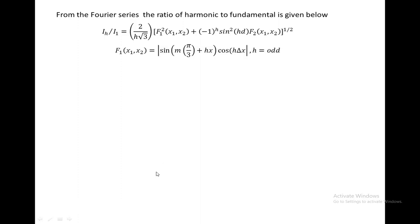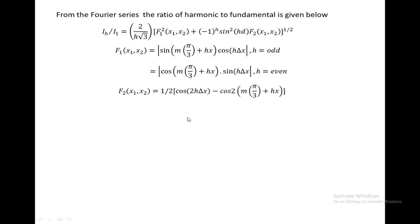Now we define f1: f1(x1, x2) = sin(m·π/3 + h·x) · cos(h·Δx), where h is an odd harmonic. If the order of the harmonic is even, then f1 = cos(m·π/3 + h·x) · sin(h·Δx), where h is an even order harmonic. Similarly, f2(x1, x2) = (1/2)[cos(2h·Δx) − cos(2·m·π/3 + h·x)], where x = (x1 + x2)/2 is the average value and Δx = (x1 − x2)/2 is the difference value. Here h = 6n + m.